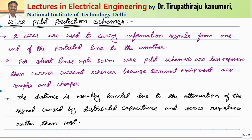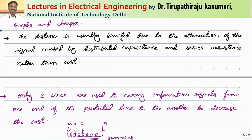For pilot wire protection schemes with three-phase systems, single phase requires two wires, but three-phase requires at least four wires — three for the phases and one for the neutral. Keeping four wires drastically increases cost. Instead, we use a scheme where only two wires carry the information signals from one end of the protected line to the other. For short lengths up to 30 kilometers, wire pilot schemes are less expensive than carrier current schemes because the terminal equipment is simpler and cheaper — direct cable only is used.